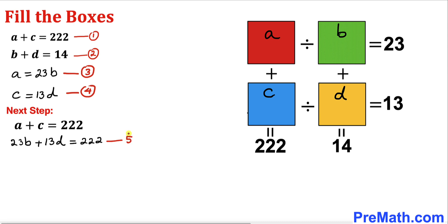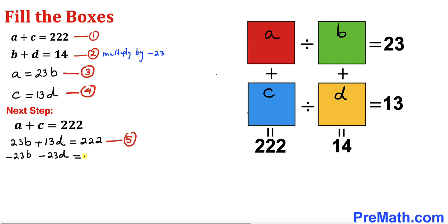Now let's focus on equation two. We are going to multiply both sides of equation two by negative 23, so equation two becomes negative 23B minus 23D equals negative 322 on the right-hand side. Now we are going to use the elimination method to solve these two equations.